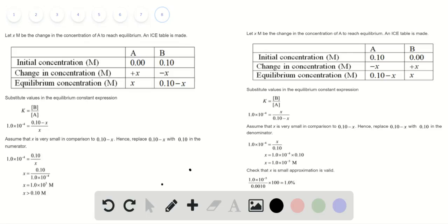Hence, we replace 0.10 minus x with 0.10 because the value of x is too small. Here the value of x is greater than 0.10 but x should be less than 0.10. So this case is a positive. The approximation is greater than 5%, so it is invalid.